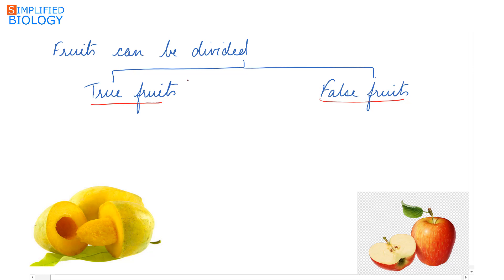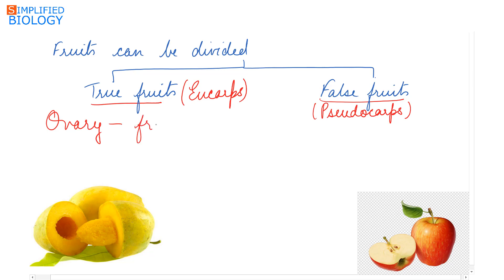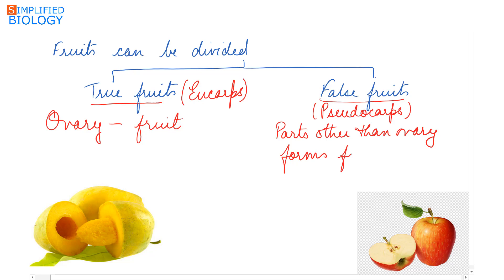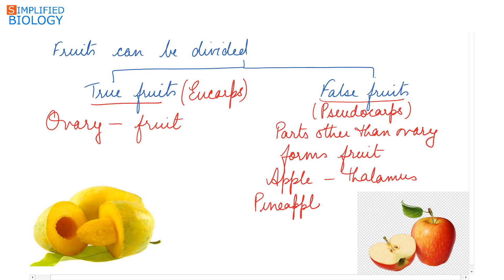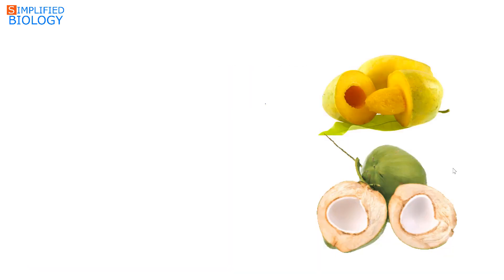True fruits are also referred to as eucarp, while false fruits are referred to as pseudocarp. When the ovary forms the fruit, that is referred to as a true fruit — for example, mango. When parts other than the ovary form the fruit, that is referred to as a false fruit — for example, apple, where the thalamus forms the fruit, and pineapple, where the complete inflorescence forms the fruit.